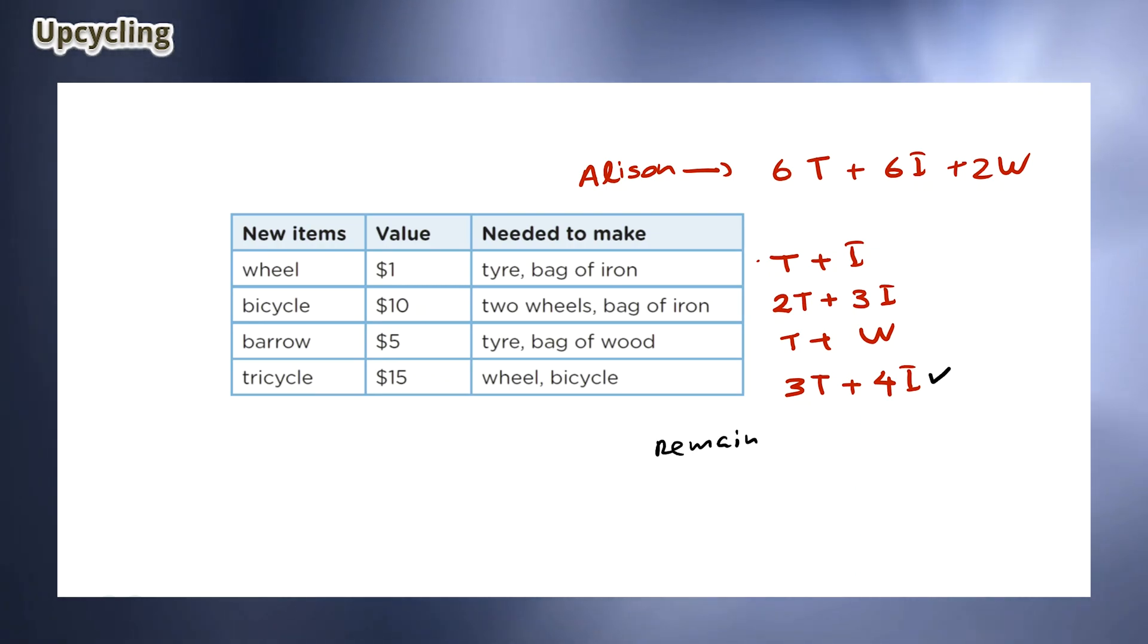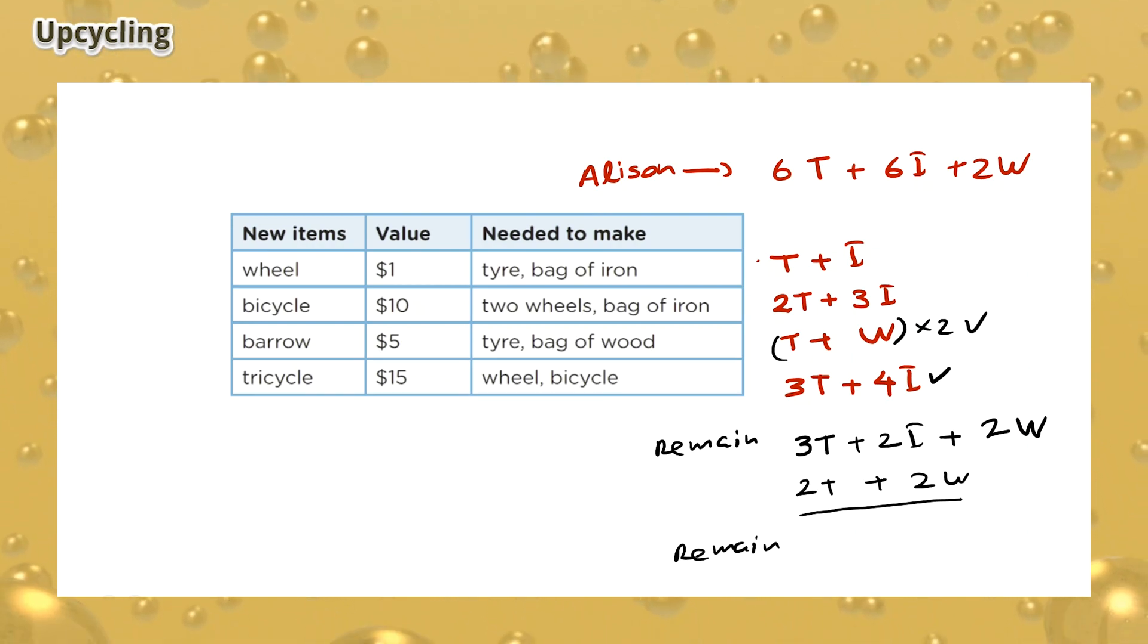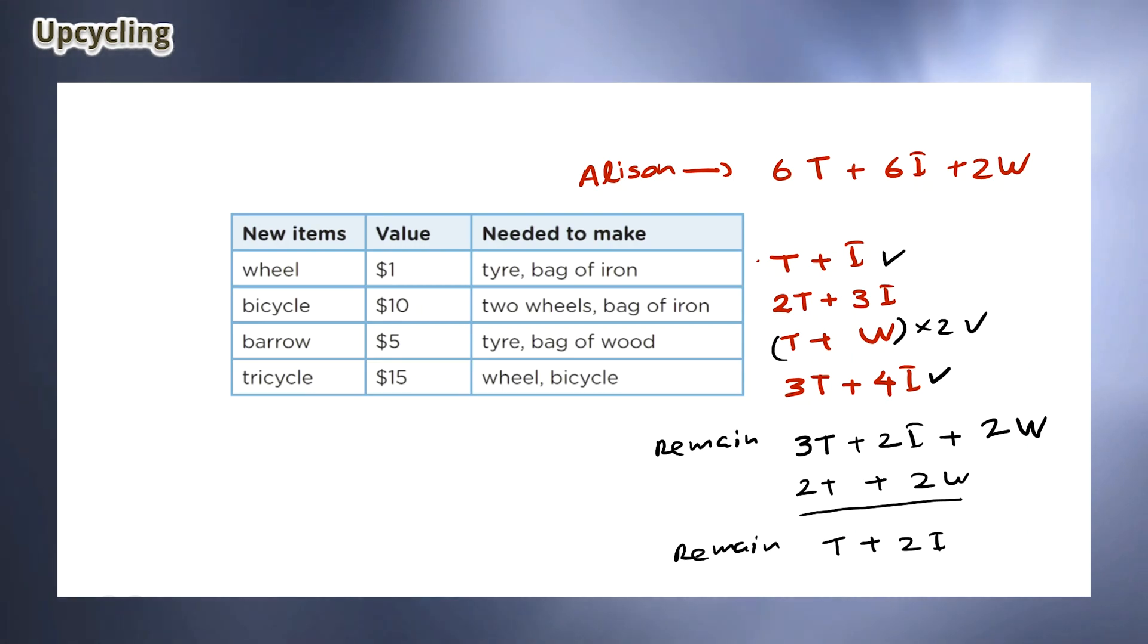When she makes a tricycle, she will have three tires, two bags of iron and two wheels remaining. From her remaining materials, she can choose to make two barrels, which will take two tires and two bags of wood. She will have a tire and two bags of iron remaining. With this, she can make another wheel. After building the wheel, Alison will have one bag of iron remaining. The tricycle will sell for $15, the barrel will sell for $10 and the wheel will sell for $1. All together, Alison makes a profit of $26.